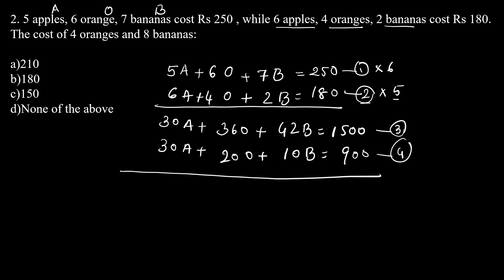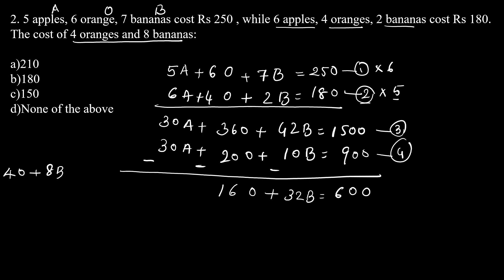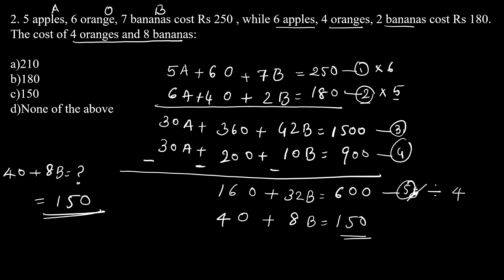Now we compute equation 3 minus equation 4. We get 30 minus 30 is 0 for A, 36 minus 20 is 16O, and 42 minus 10 is 32B, equaling 1500 minus 900, that is 600. So 16O plus 32B equals 600. Dividing this expression by 4, we get 4O plus 8B equals 150. So 150 is the correct answer, option C.